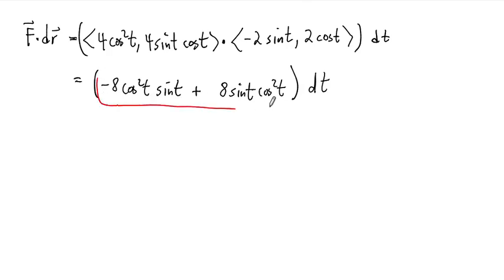But look at this. This integrand is a difference of two things that are equal. So this is just 0. So 0 dt.